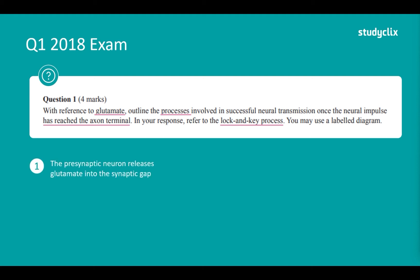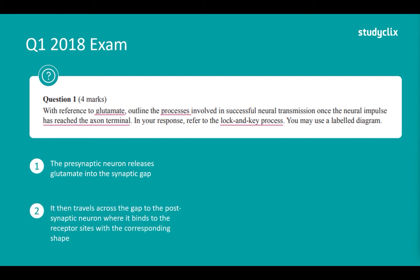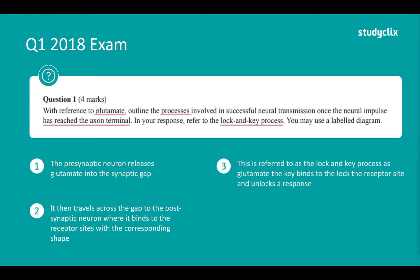Step one: the presynaptic neuron releases glutamate into the synaptic gap. It then travels across the gap to the postsynaptic neuron where it binds to the receptor site with the corresponding shape — that's marks one and two. Mark three comes from saying this is referred to as the lock and key process, as glutamate the key binds to the lock, the receptor site, and unlocks a response. We need to specify what is the lock and what is the key and how it works.